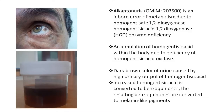Alkaptonuria is an inborn error of metabolism. It occurs due to accumulation of homogentisic acid within the body due to the deficiency of homogentisic acid oxidase. This results in a dark brown color of urine, caused by high urinary output of homogentisic acid.